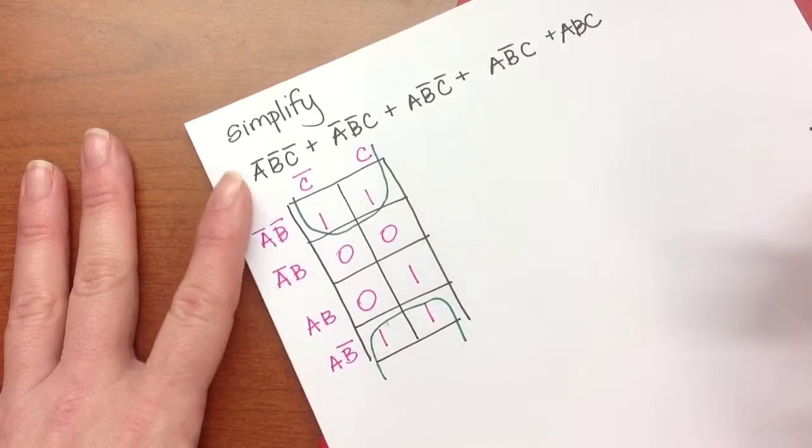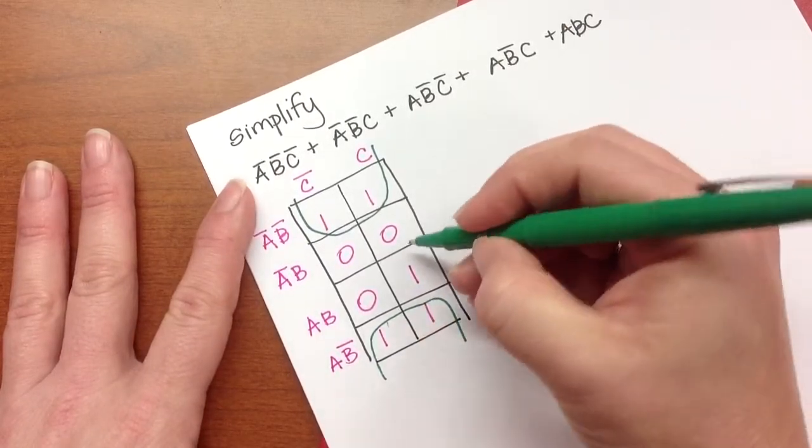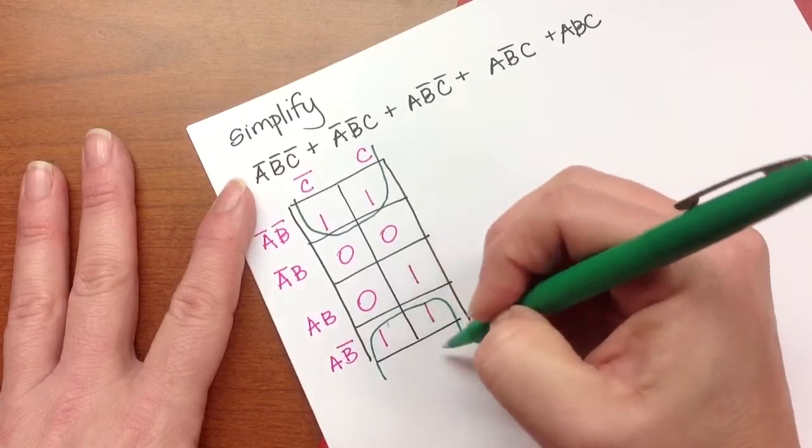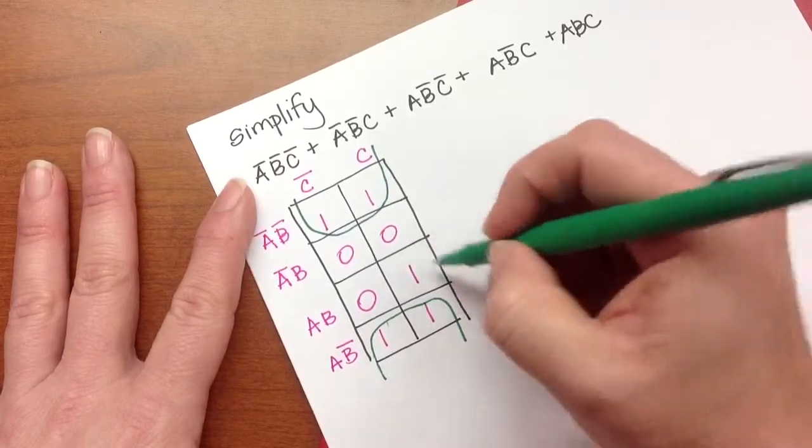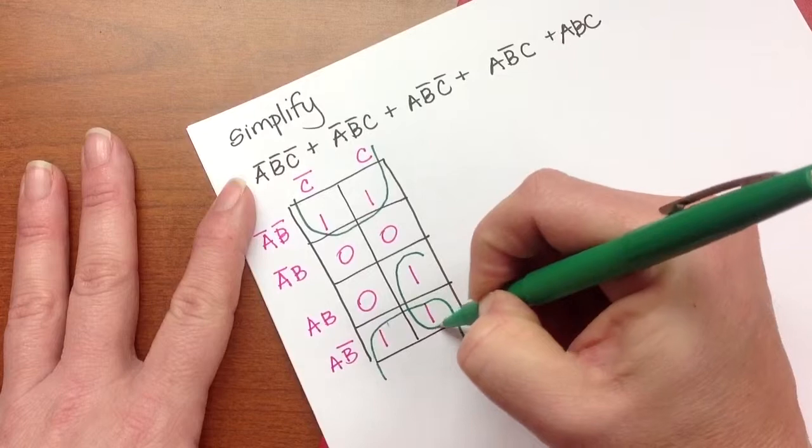The larger the group, the better the simplification. And then I have one here. I would rather overlap it into a pair than leave it isolated, so I'll have a group there as well.